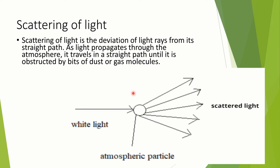Scattering of light is the deviation of light rays from its straight path. As light propagates through the atmosphere, it travels in a straight path until it is obstructed by bits of dust or gas molecules.